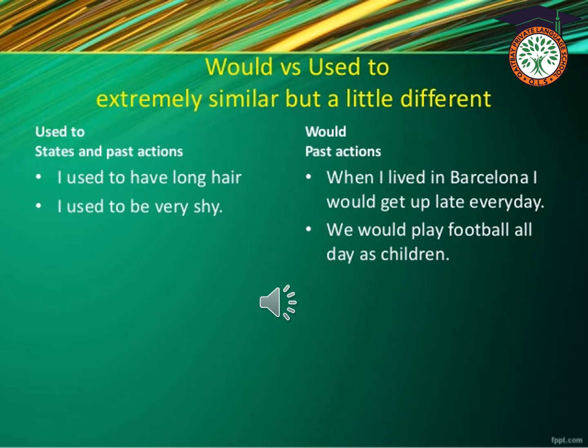'Would' versus 'used to' — extremely similar but with a little difference. The difference is that we use 'used to' with states and actions — both stative verbs and action verbs. For example: I used to have long hair, or I used to be very shy. But we use 'would' with past actions only. Like: when I lived in Barcelona, I would get up late every day. We would play football all day as children.